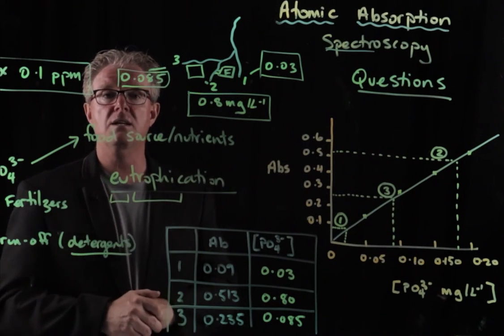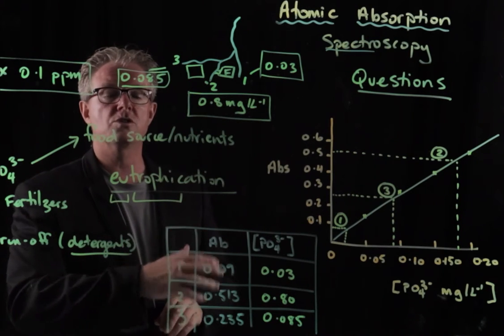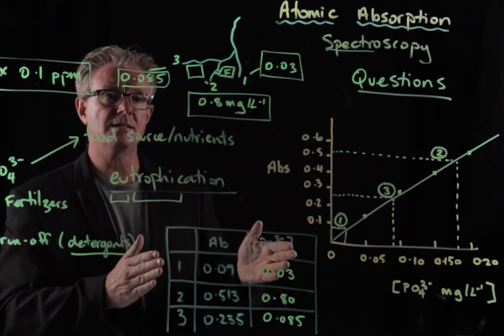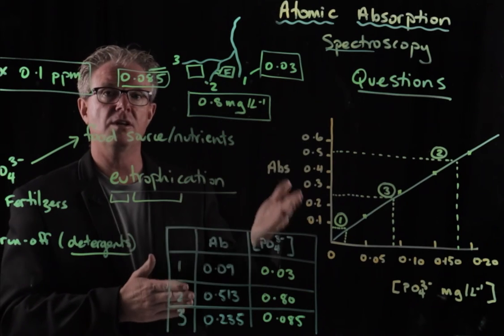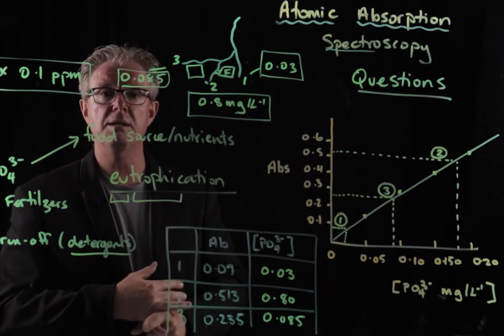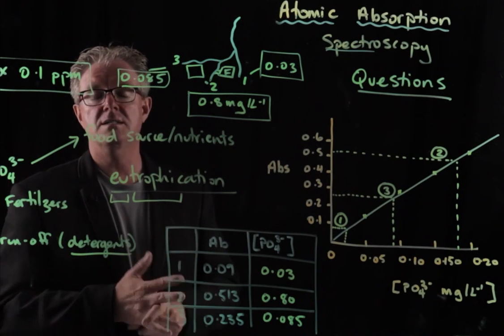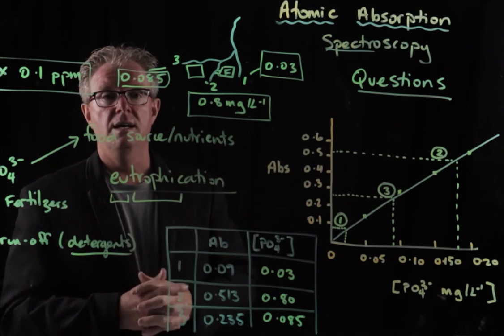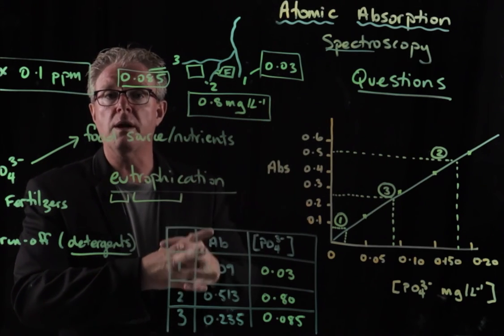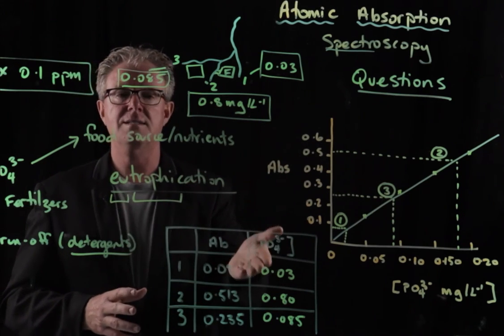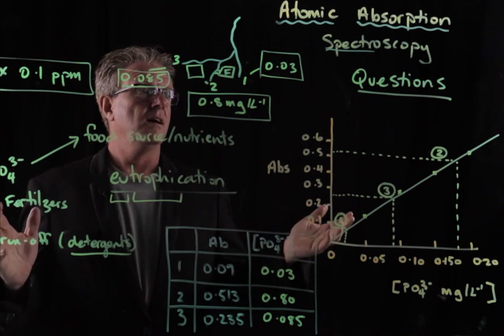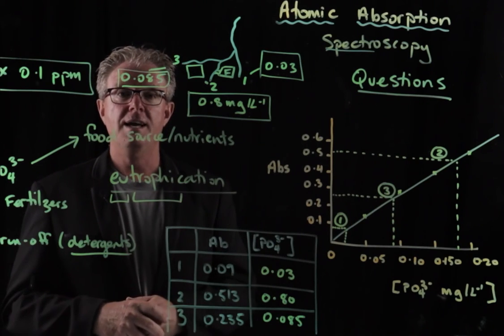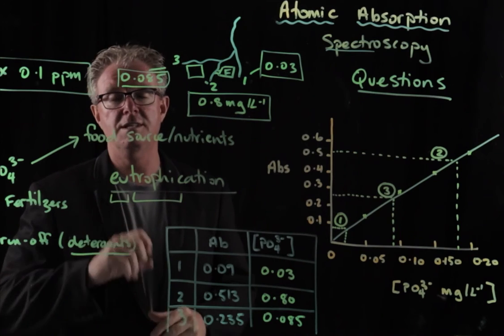Phosphates we do in another video, make sure you watch it, which is looking at the colorimeter technique and the absorption of light in a colorimeter based on a color reaction between molybdate, ammonium molybdate, ascorbic acid. And that gives a nice blue complex that we can use to measure its concentration. Hope that makes sense for you. And yeah, keep doing your chemistry and I'll see you in another video.